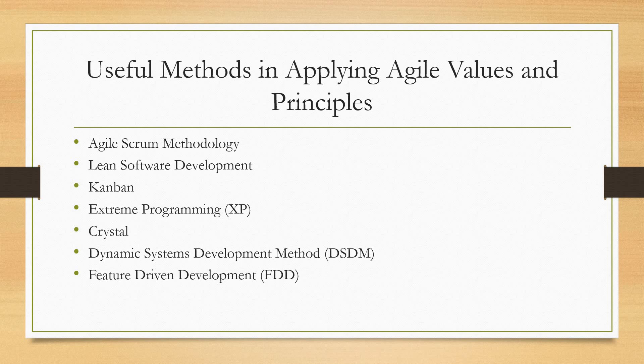There are many useful methods for applying Agile values and principles in software development, such as Agile Scrum methodology, Lean software development, Kanban, Extreme programming, Crystal, Dynamic Systems Development, and Feature Driven Development. The most common and most widely used method is Agile Scrum methodology. The entire Scrum process has been explained in my previous video — please go to the channel and watch it.